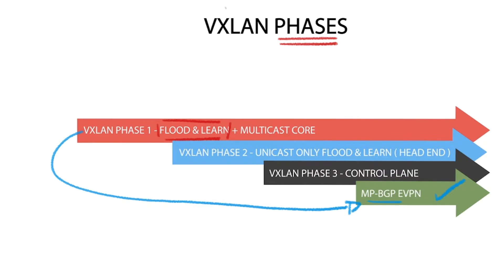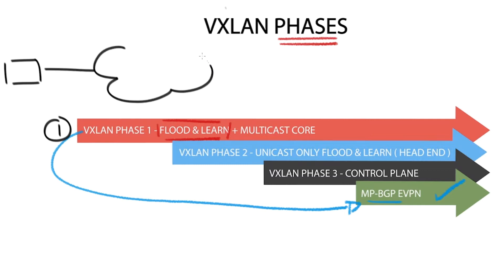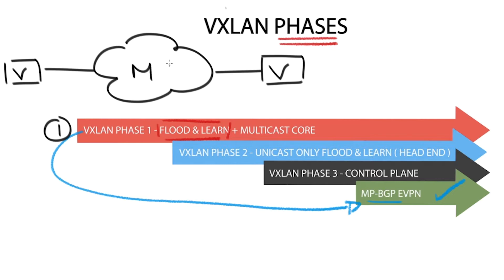The first phase of VXLAN uses multicast-based transport with no control plane. End-host reachability relies on data plane learning techniques. This version of VXLAN wasn't too popular as it required IP multicast to be enabled in the core to aid the learning process.